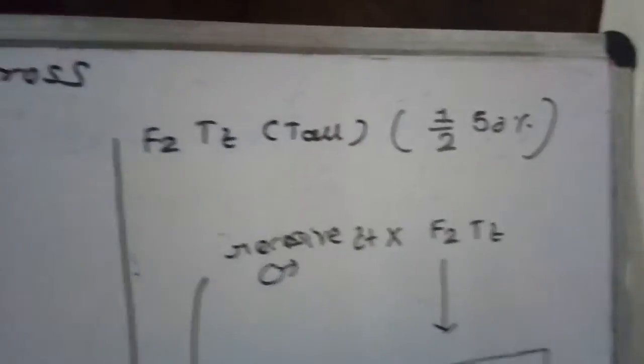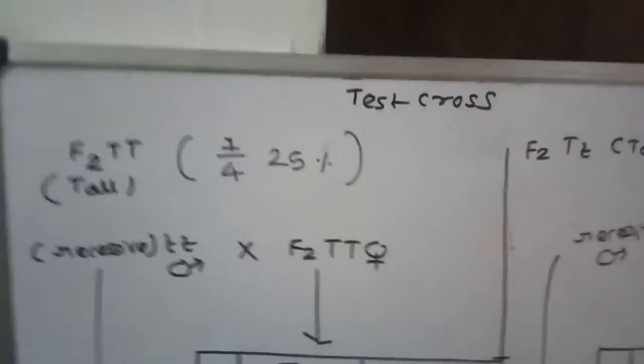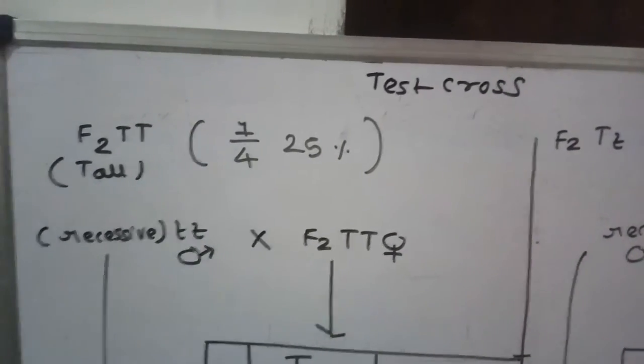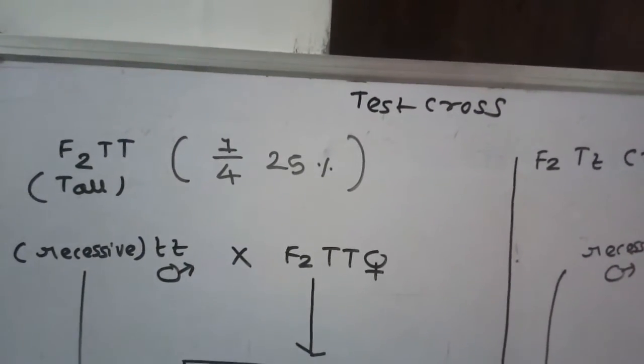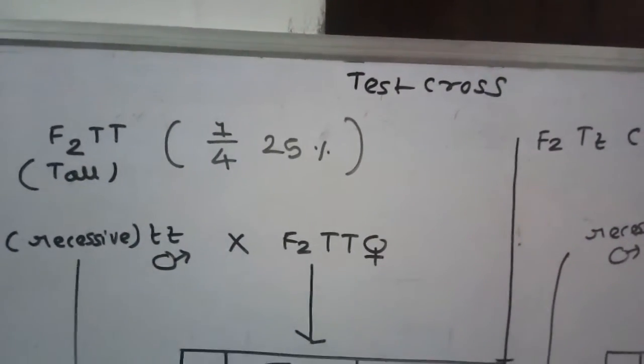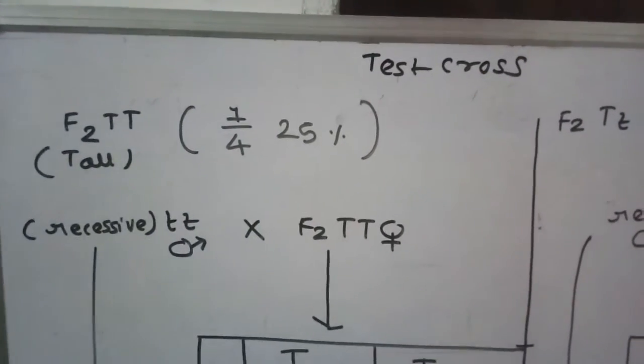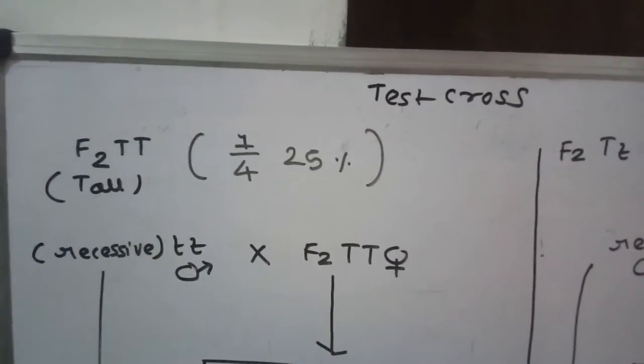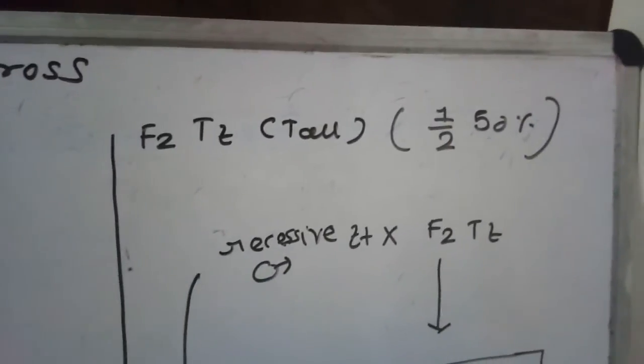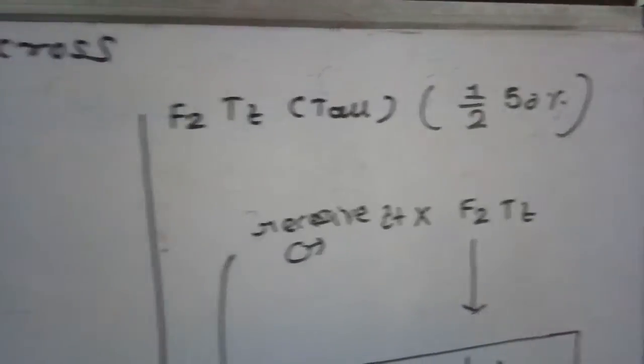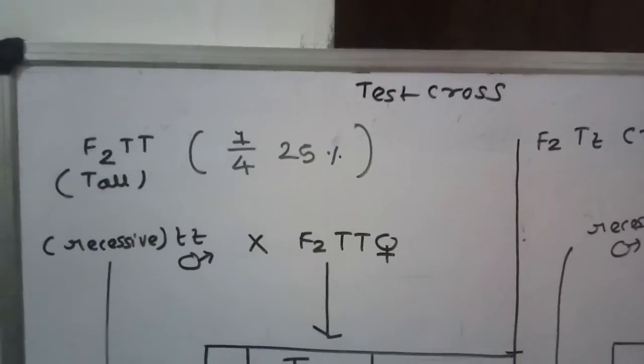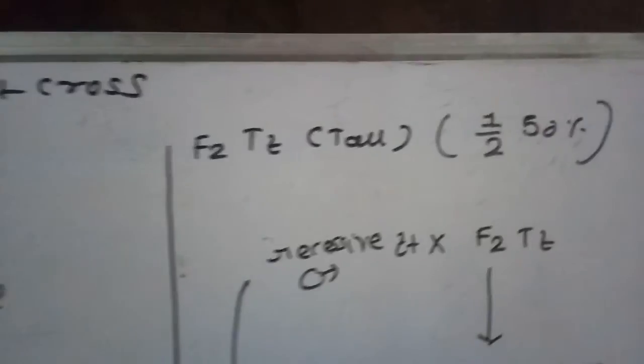If we recall the F2 generation phenotypic ratio, we get 3 to 1 ratio of tall to dwarf plants. The dwarf plant is 1/4 in which there is no doubt - they are small t small t. But the 3/4 tall plants may not have the same genotype. They can be homozygous or heterozygous.